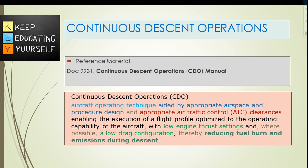As a passenger, you must have felt that the aircraft reduces altitude for a short duration and then increases engine thrust and then lowers it again. Continuous descent approach is a flight operation technique close to the optimum performance of aircraft, with minimum thrust and continuous descent.